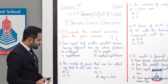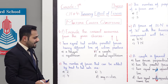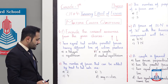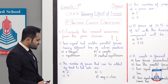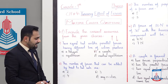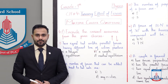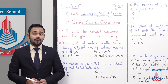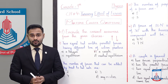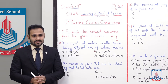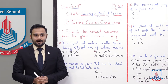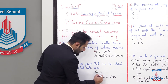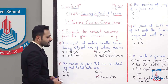Now the next MCQ. The number of forces that can be added by the head-to-tail rule are: A: 2, B: 3, C: 4, and D: any number. According to the head-to-tail rule, no matter how many forces there are, you can add them all up. So the correct option is D, which is any number.